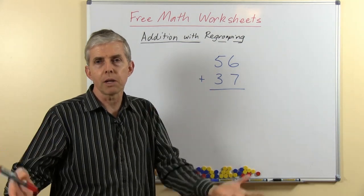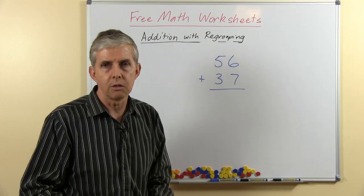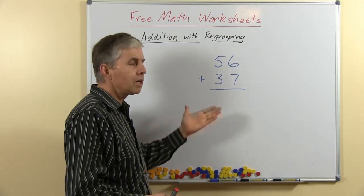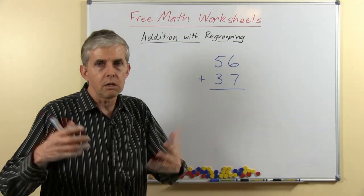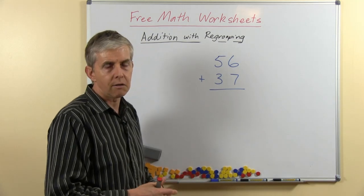So when it's number facts like 3 plus 6, we want the students to just go, that's 9 because they've memorized it. But when we get here we're getting to a question where the numbers are too big, and we wouldn't expect anyone to memorize, so there's a multi-step process to carry out.